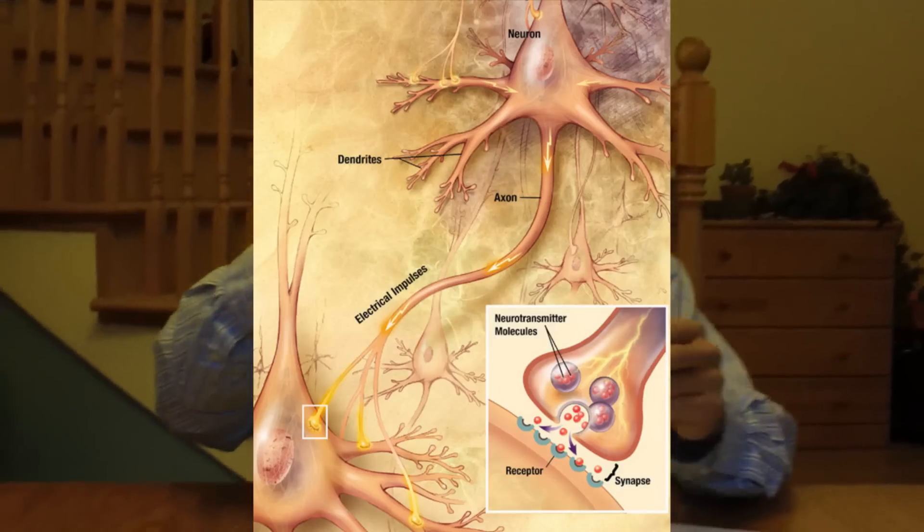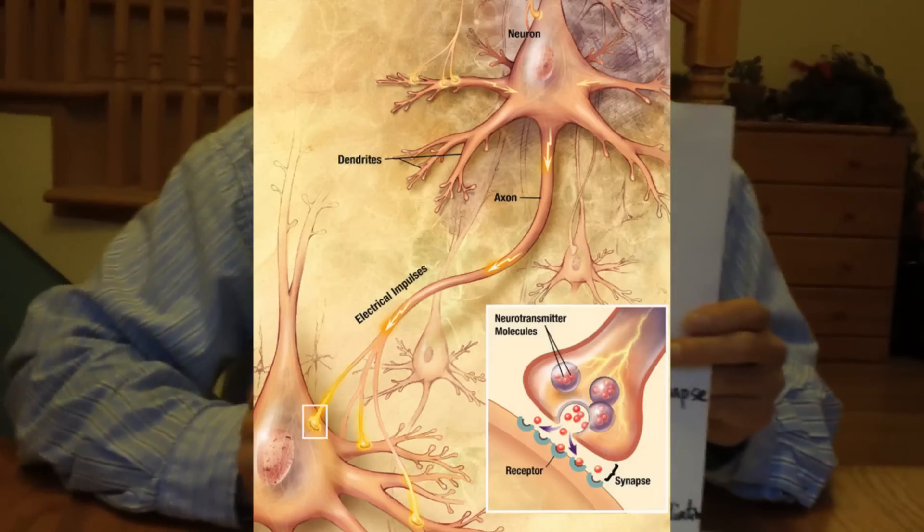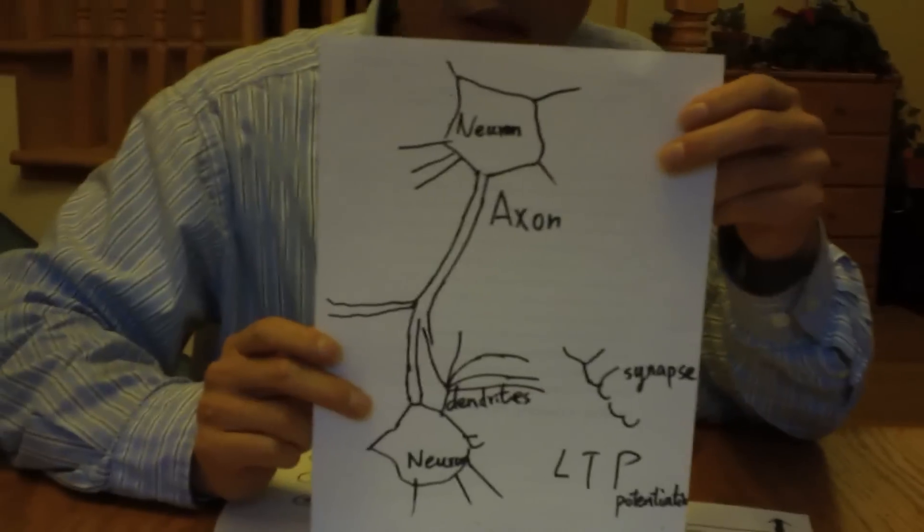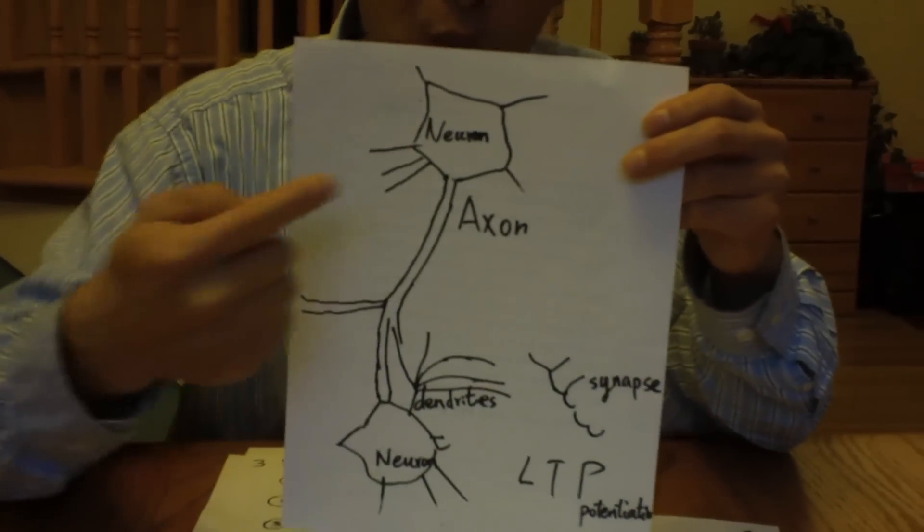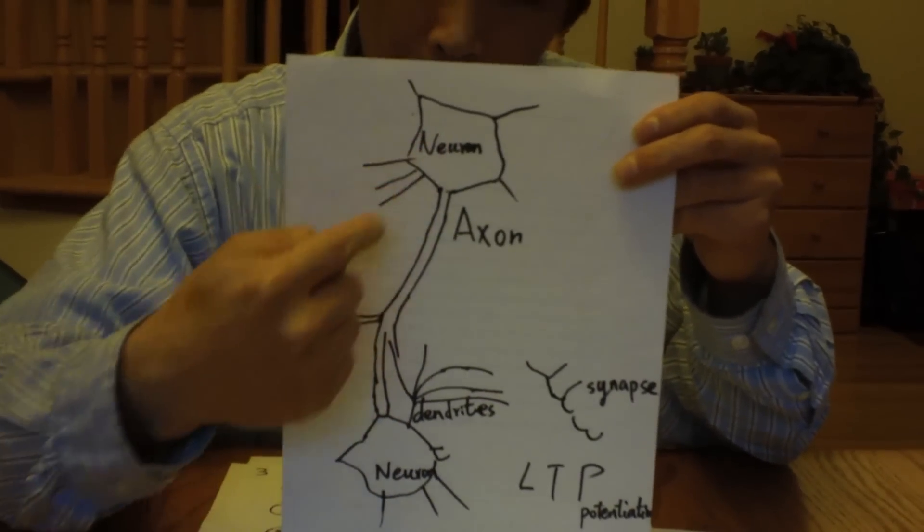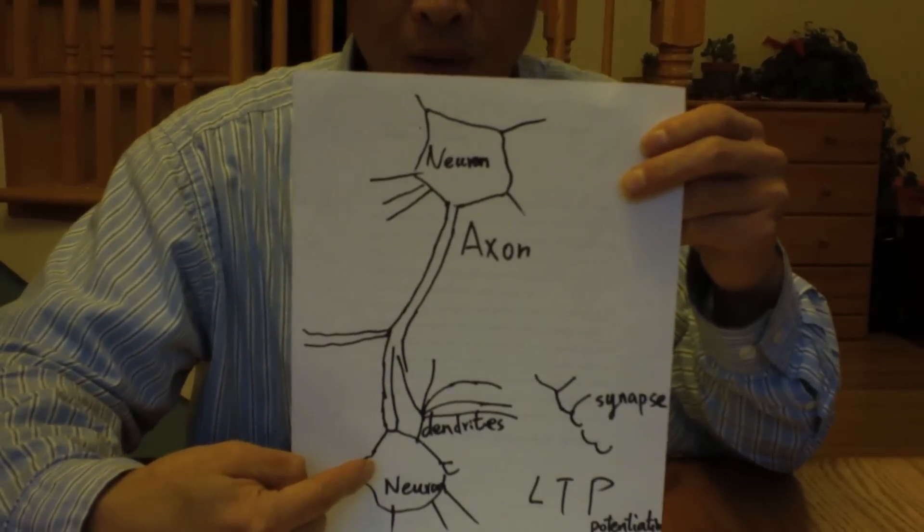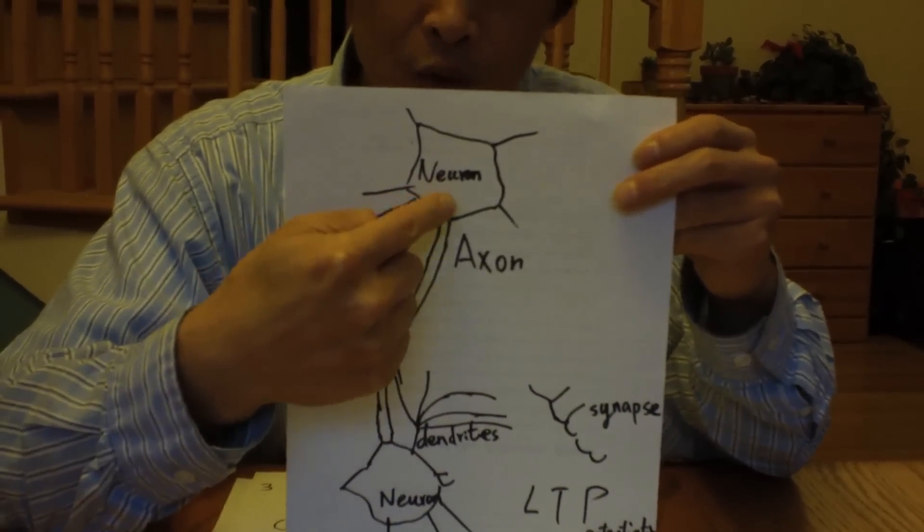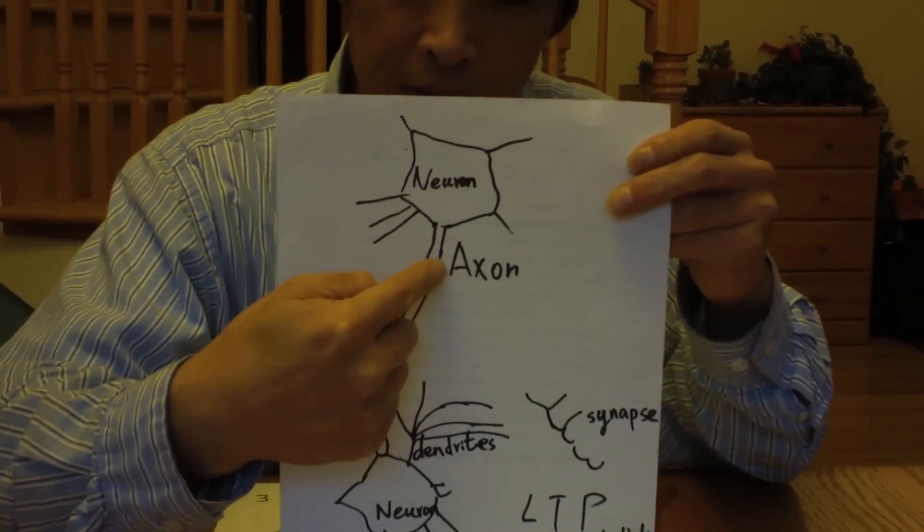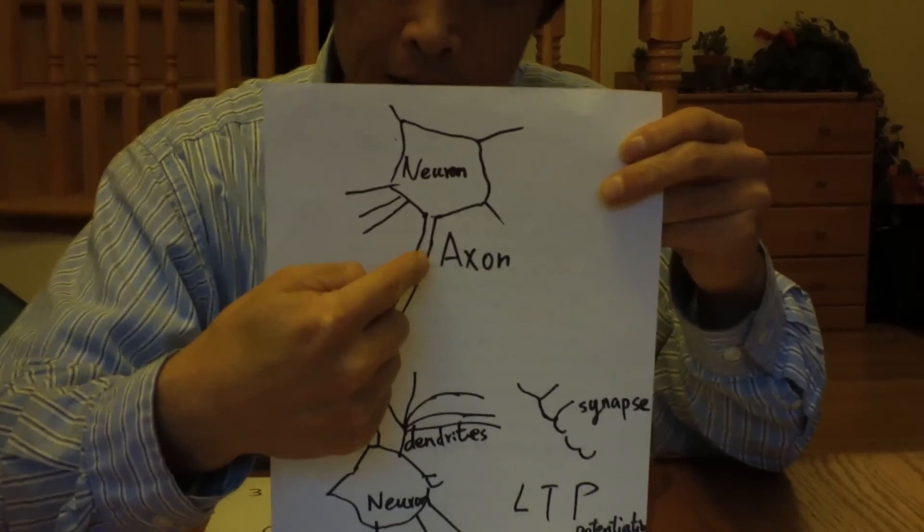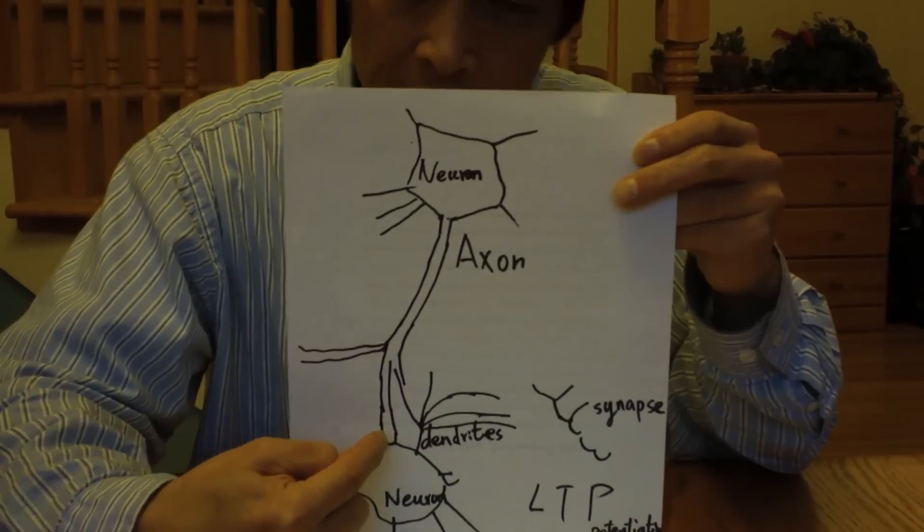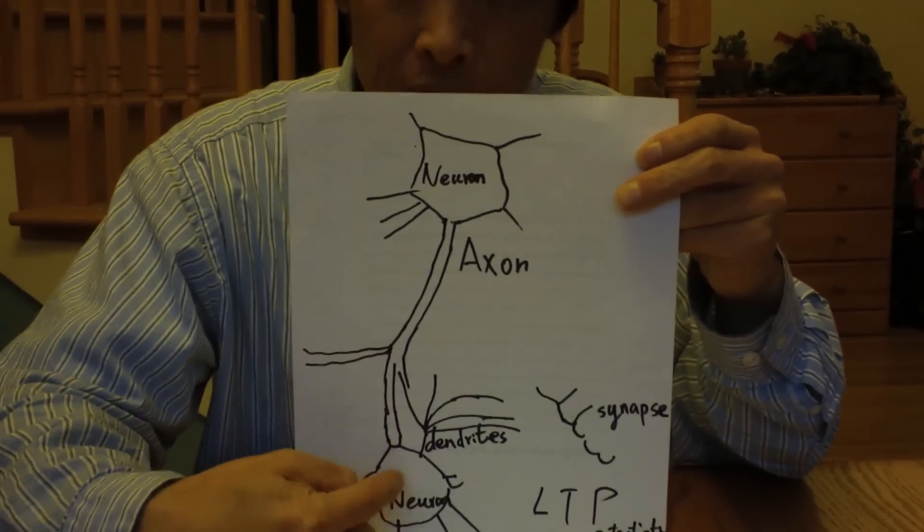There are millions of neurons in your brain. This is an example of one neuron and how this neuron connects to another neuron. The output of a neuron is called the axon. The axon connects to dendrites of another neuron.